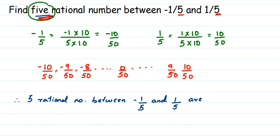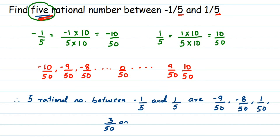So five rational numbers between -1/5 and 1/5 — I'm just picking five randomly: -9/50, -8/50, 1/50, 3/50, and 7/50. Remember these are the equivalent rational numbers of -1/5 and 1/5, so I hope this question is clear.